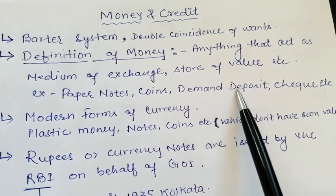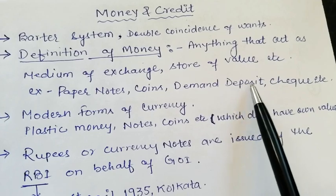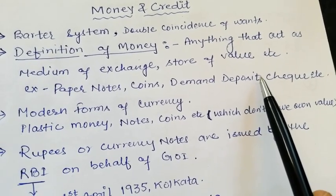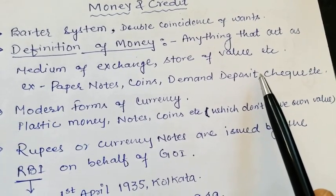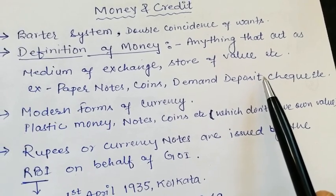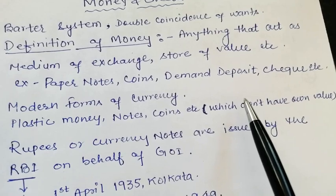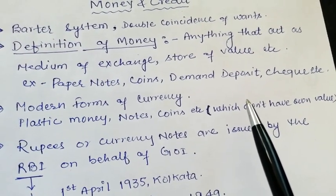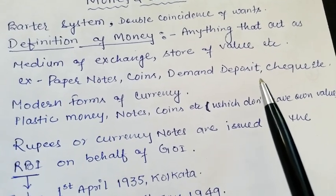And dear students, you know what a cheque is. A cheque is a paper instructing the bank to pay a specific amount from the person's account to the person in whose name the cheque has been made. The amount written on the cheque gets transferred from the account of the person who gave the cheque to the person named on it. That is known as a cheque.